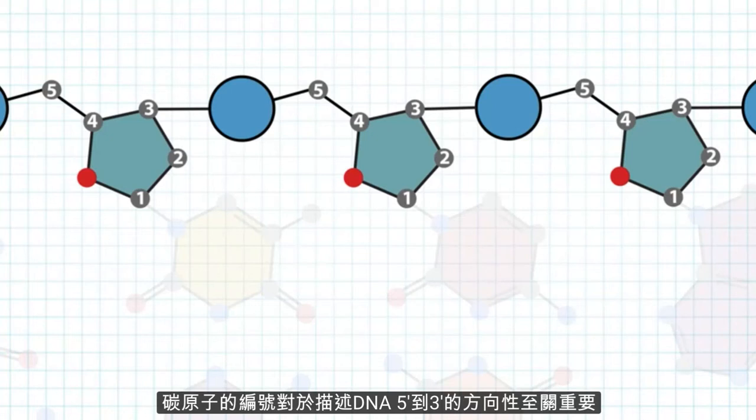The carbon numbering is key to describing the directionality of the DNA strand, 5' to 3'.